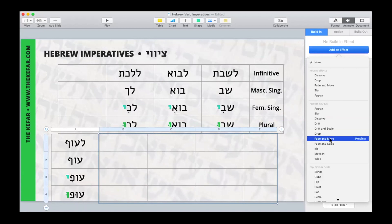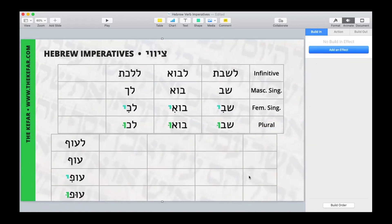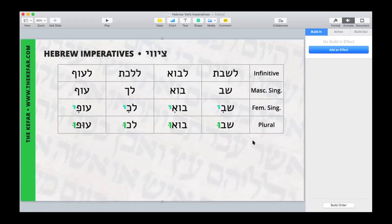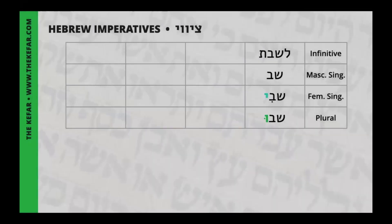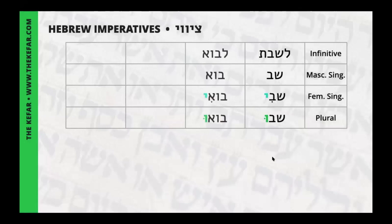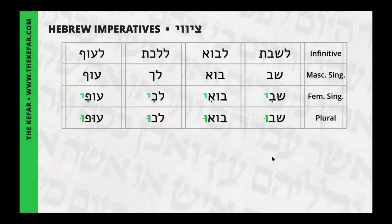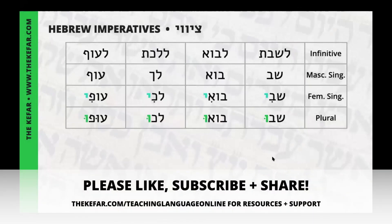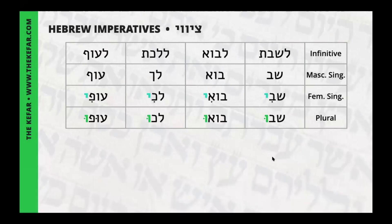We are going to do Fade and Move. Now it looks exactly like a regular table, just like it did before. But when we present or hit play, you see that we've added animation for each column. With this last one, you were able to see the table movement. So if you don't want that, pick something like Dissolve or Appear. If it doesn't matter to you, then you can go crazy.